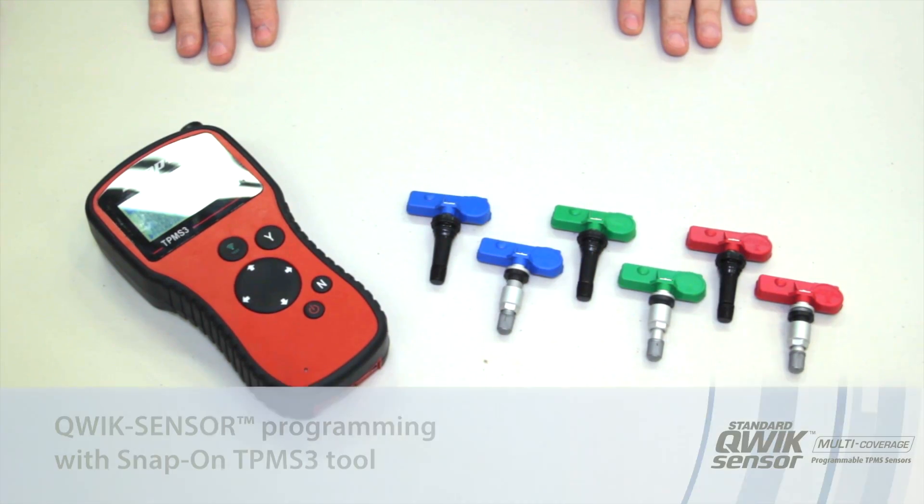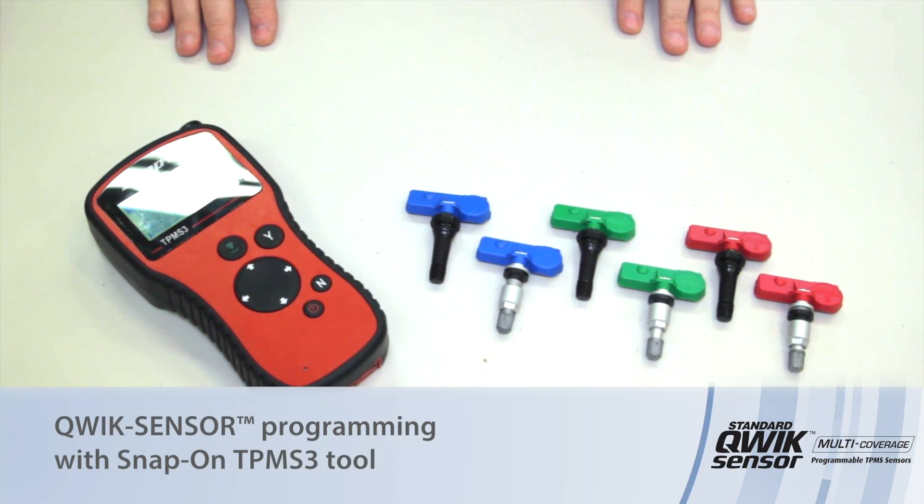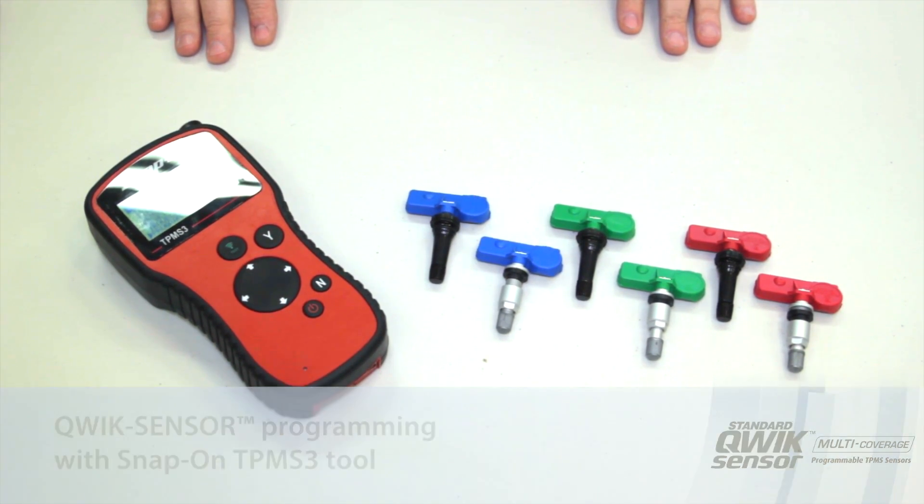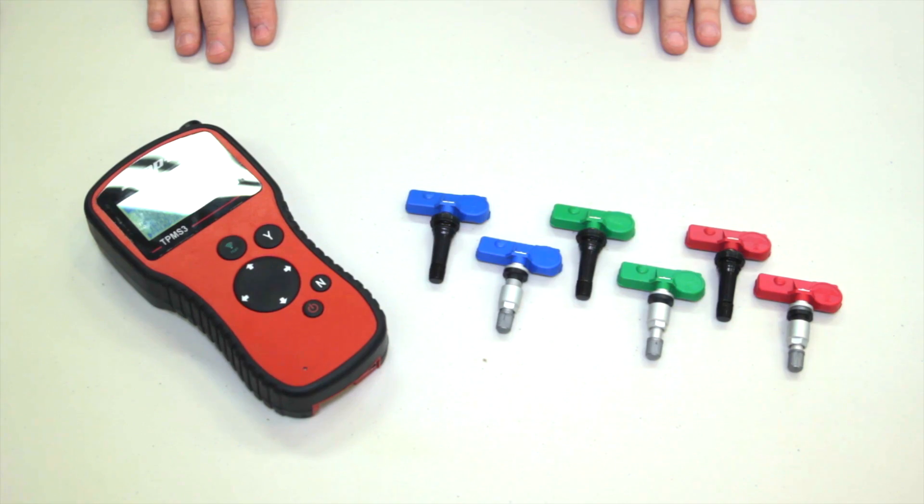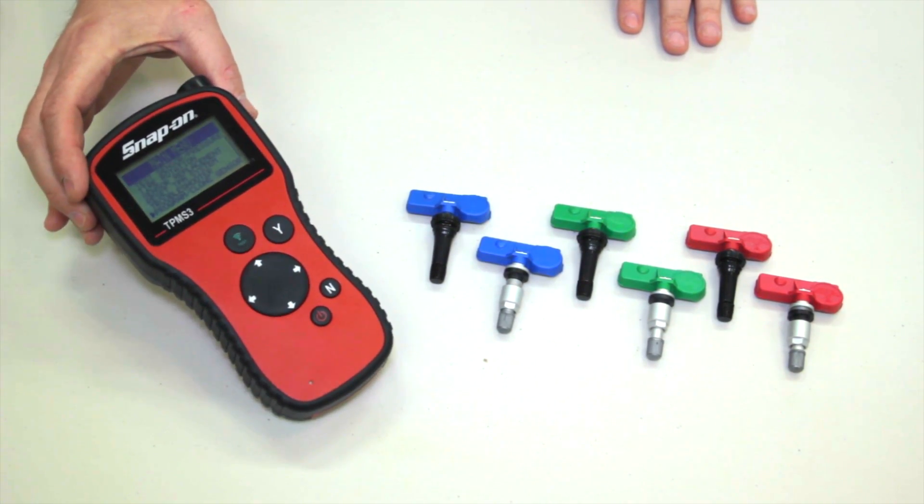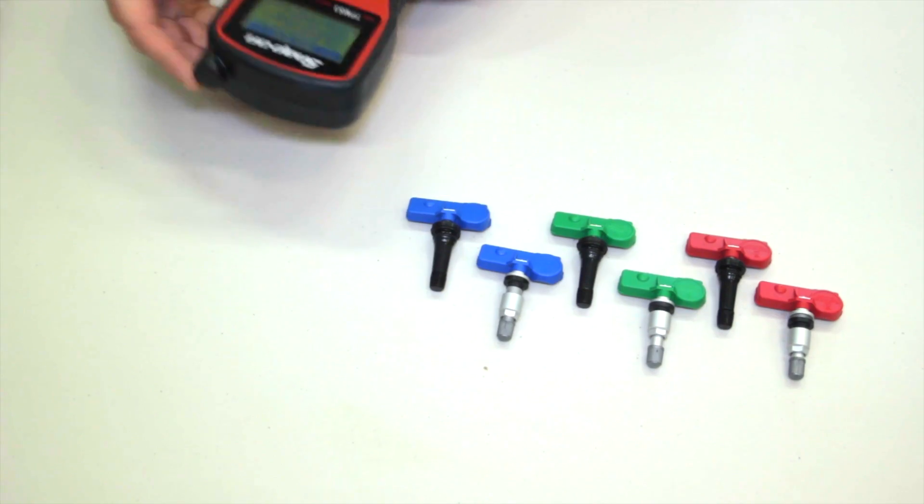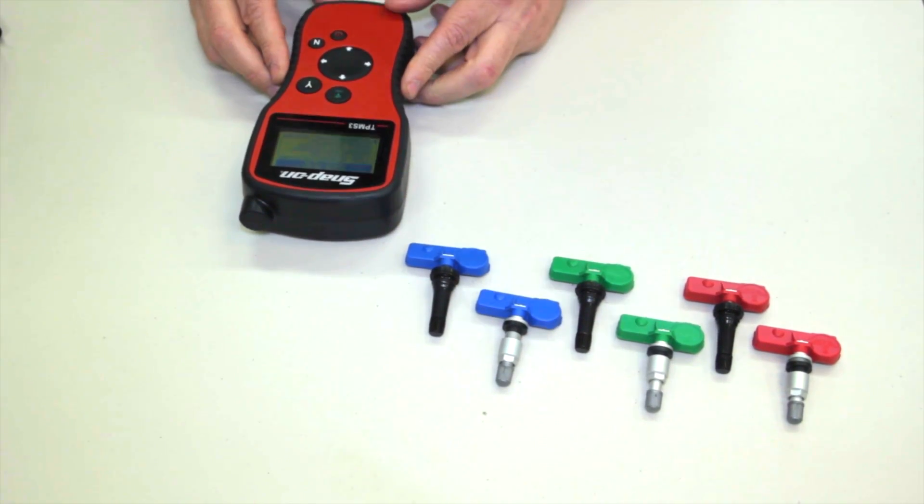Today let's discuss how to program a quick sensor. The quick sensor multi-coverage TPMS sensor is designed to be programmed prior to installation. Using a simple programming tool, you can pick the year, make, and model and have it fit the application that you're working on.